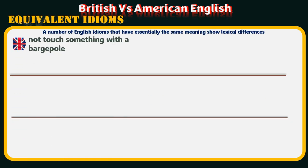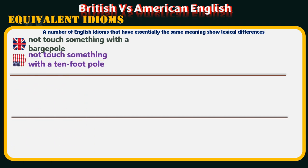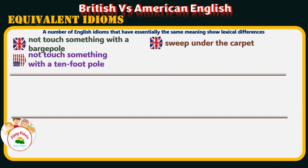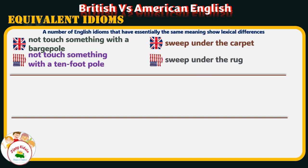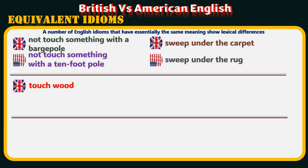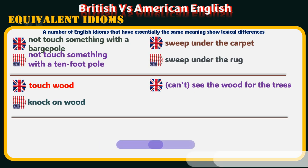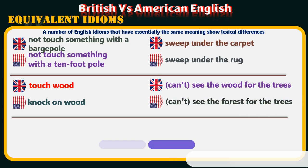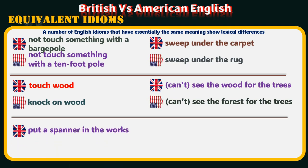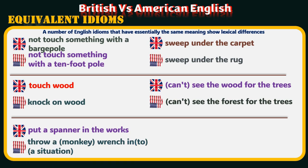Equivalent idioms: A number of English idioms that have essentially the same meaning show lexical differences between the British and the American version. British: 'Not touch something with a barge pole.' American: 'Not touch something with a 10-foot pole.' British: 'Sweep under the carpet.' American: 'Sweep under the rug.' British: 'Touch wood.' American: 'Knock on wood.' British: 'Can't see the wood for the trees.' American: 'Can't see the forest for the trees.' British: 'Put a spanner in the works.' American: 'Throw a monkey wrench into a situation.'